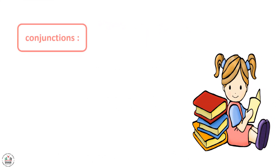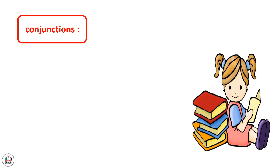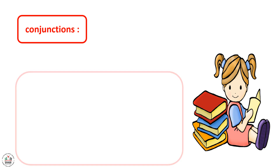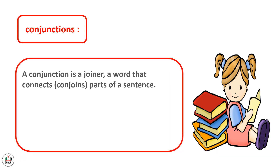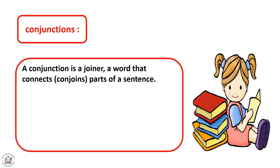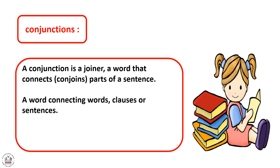What do we mean by conjunctions? A conjunction is a joiner — a word that connects parts of a sentence. It is a word connecting words, clauses, or sentences.